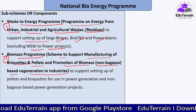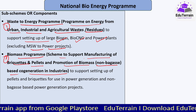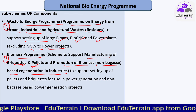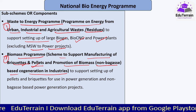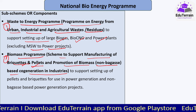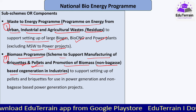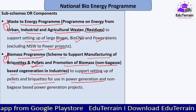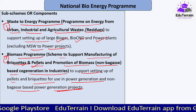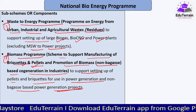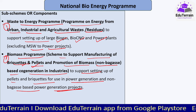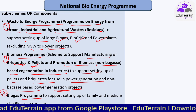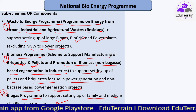Under the Biomass Program, agriculture biomass like paddy straw and wheat straw is compressed into briquettes or pellets, which are used in co-firing in thermal stations alongside coal to generate electricity. The third component is the Biogas Program, which supports setting up of family and medium-size biogas plants in rural areas. These are the three programs or components under the National Bioenergy Program.